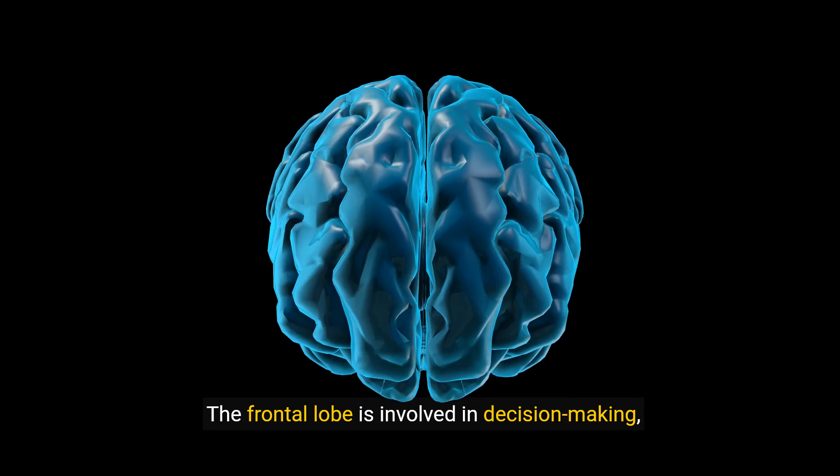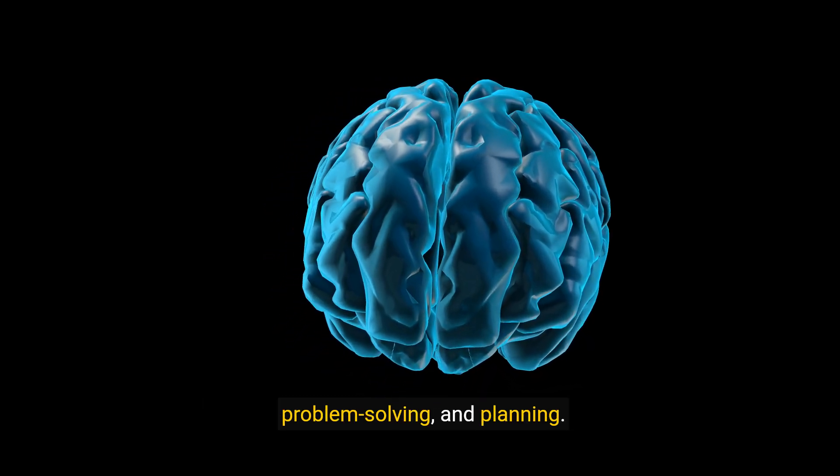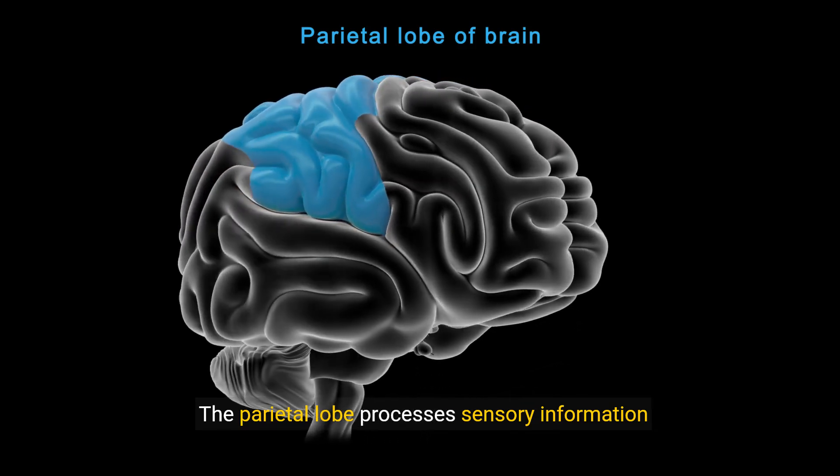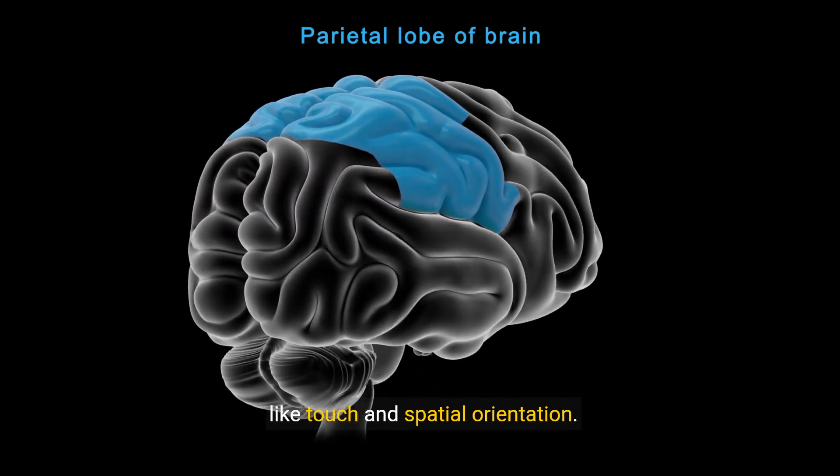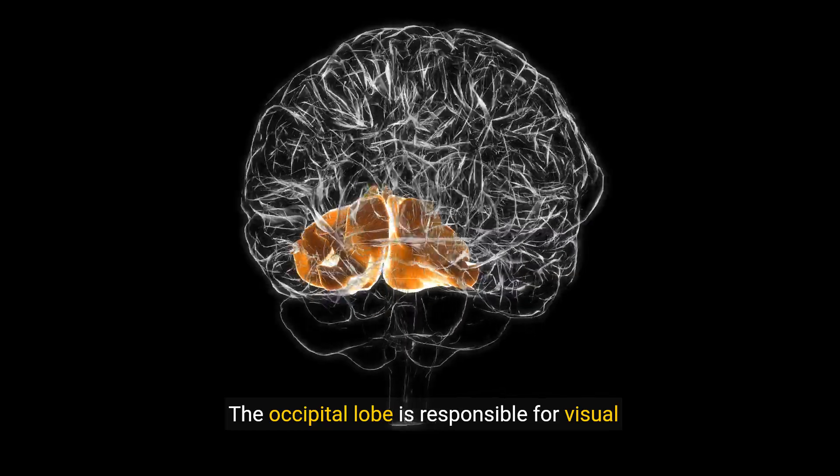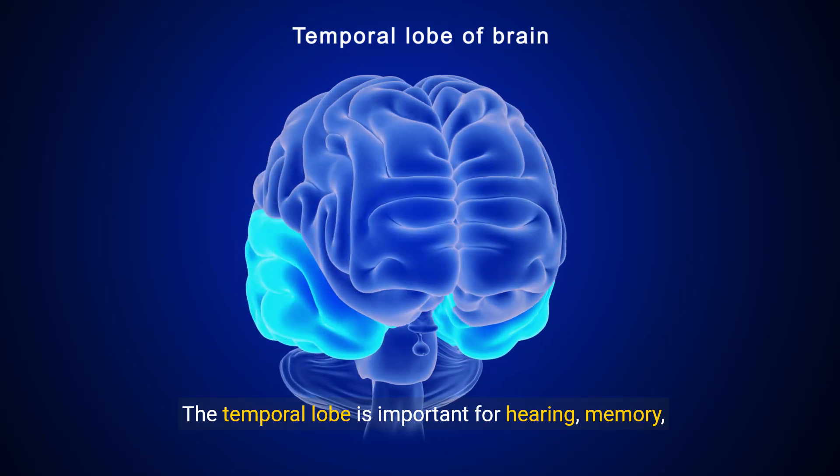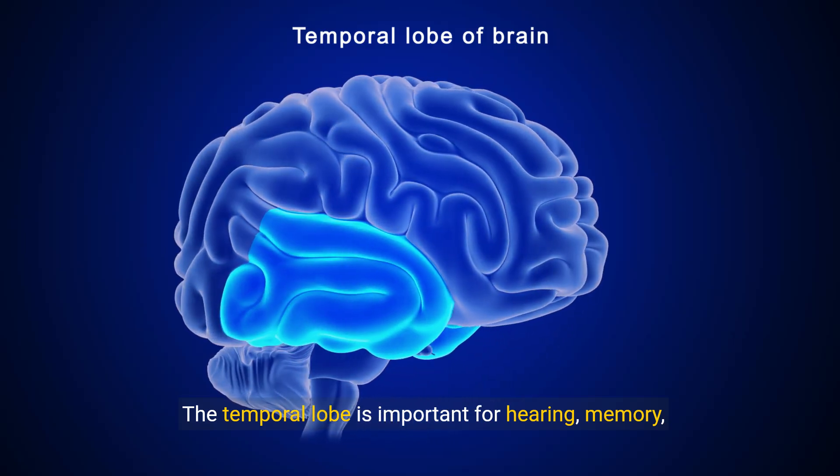The frontal lobe is involved in decision making, problem solving, and planning. The parietal lobe processes sensory information like touch and spatial orientation. The occipital lobe is responsible for visual processing. The temporal lobe is important for hearing, memory, and speech.